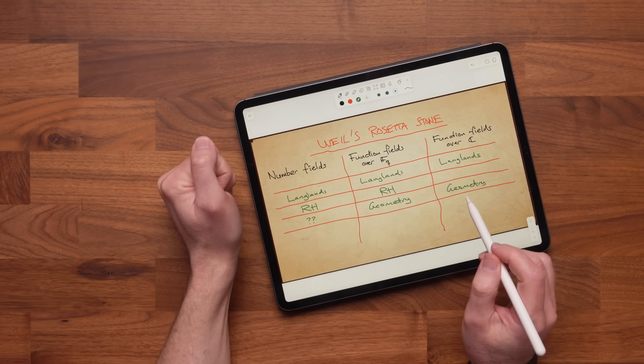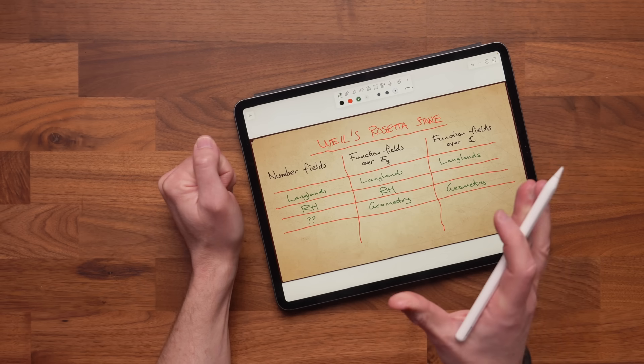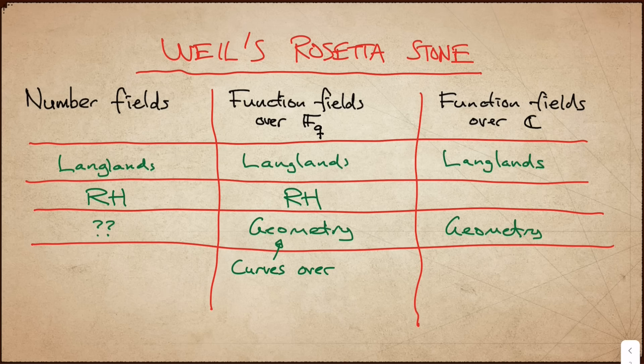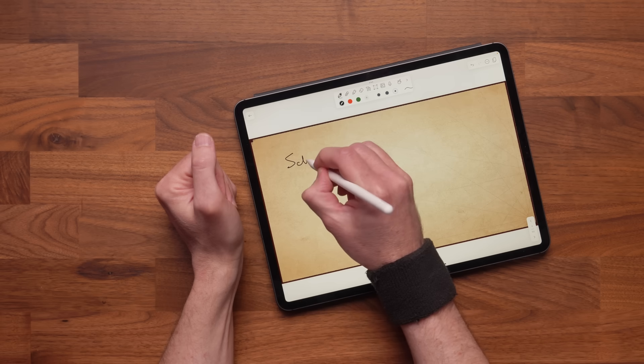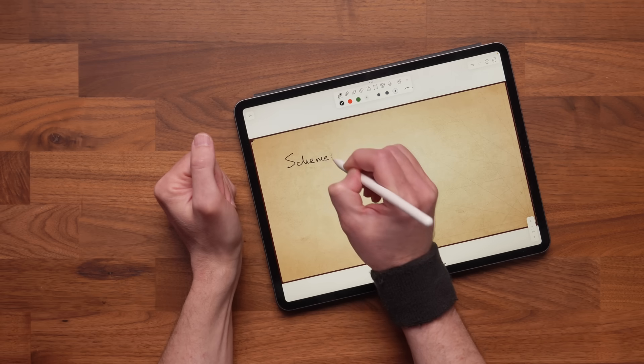In the Rosetta Stone, each of the last two geometric interpretations are of type shallow geometry: here you have curves over the projective line, and here you have Riemann surfaces over the Riemann sphere. There is a kind of geometric interpretation already also in the number field case, since you can use the language of schemes to describe number fields and their rings of integers.